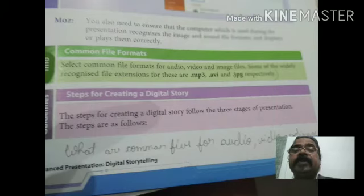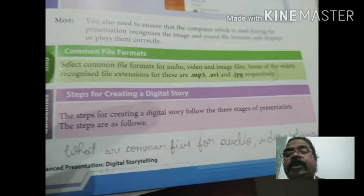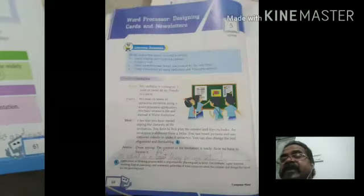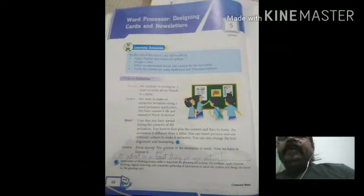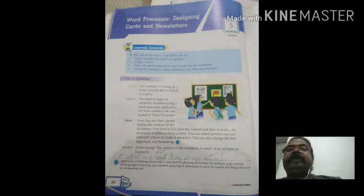In the word processor, you can download pictures from the clipart. You can use the layout, create birthday cards and invitation cards using different commands, and display them in a better way. That is the word processor. So we have 4 chapters: 2, 3, 4, and 5.